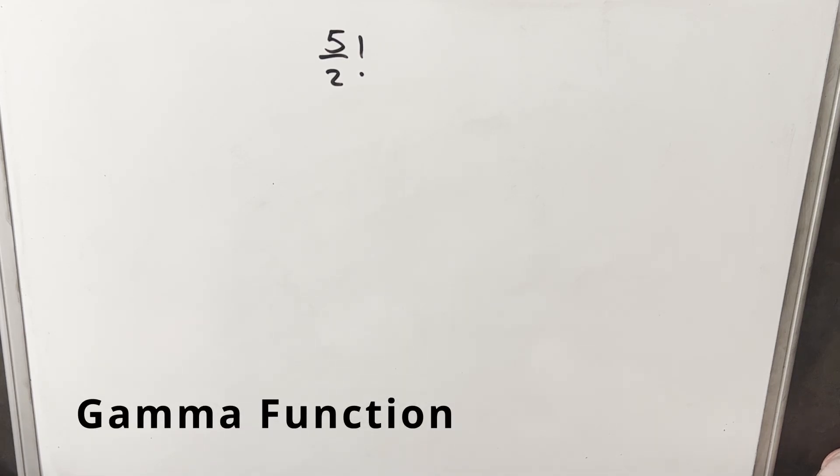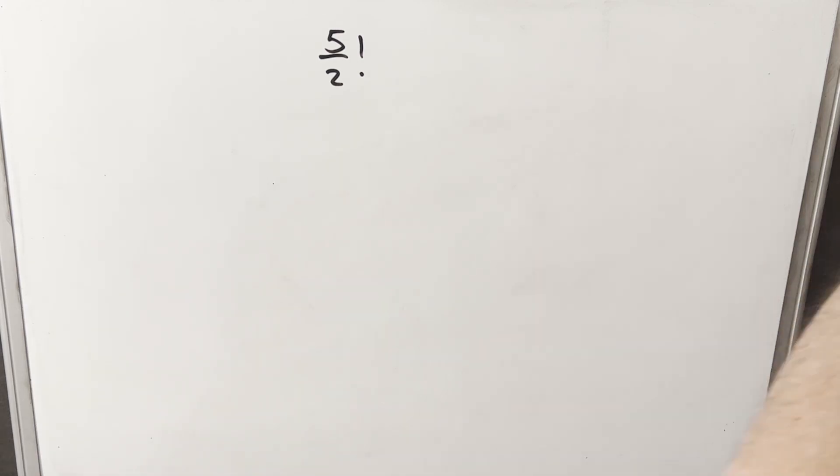I've been doing a series of videos on these fraction factorials using the gamma function and just wanted to go over five halves factorial. It does seem like a strange thing. We are used to the factorial as being positive integers and zero, and here we've got a fraction. But the gamma function allows us to extend the concept of the factorial to negative numbers, fractions, and complex numbers.